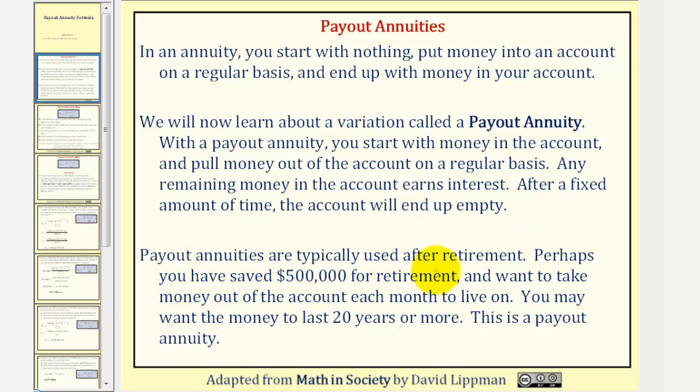Payout annuities are typically used for retirement. Perhaps you have saved $500,000 for retirement and want to take money out of the account each month to live on. You may want the money to last 20 years or more. This is a payout annuity.